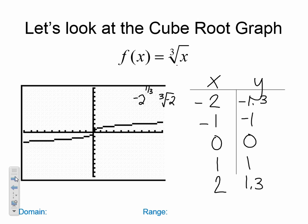And here's my picture. So you can see the key points, negative two, negative 1.3, negative one, negative one, zero, zero, one, one, and two, 1.3.